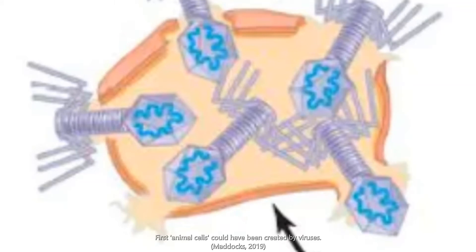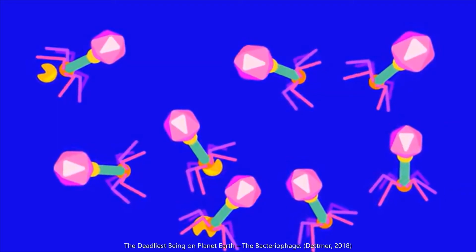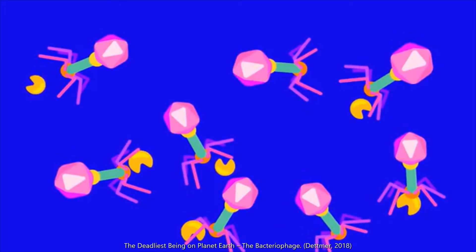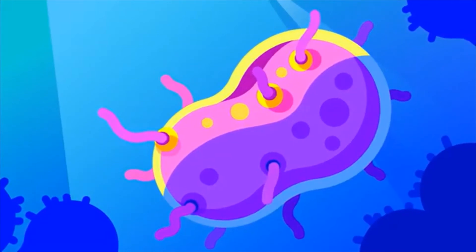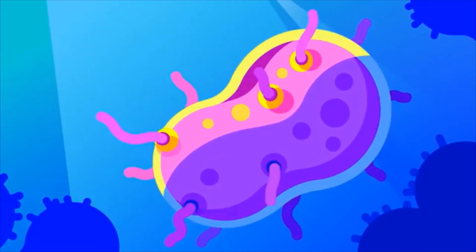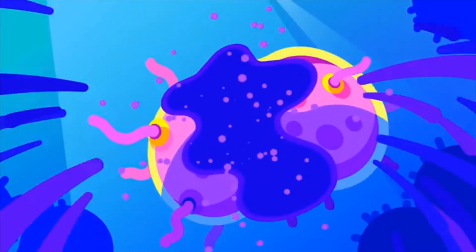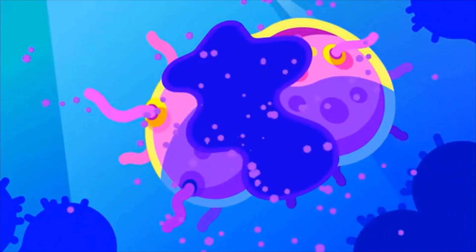Then it transitions into the fifth and final stage of the lytic cycle called release. In this stage, the cell undergoes lysis, which is the process of the membrane being broken down by viral proteins or osmotic pressure. Since the cell undergoes lysis, new virions can be released since the membrane has burst.